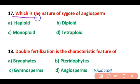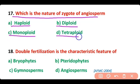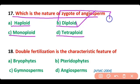Question 17. What is the nature of the zygote of angiosperms? Is it haploid, diploid, monoploid, or tetraploid in nature? The correct answer is option B. The zygote of angiosperms is diploid in nature.